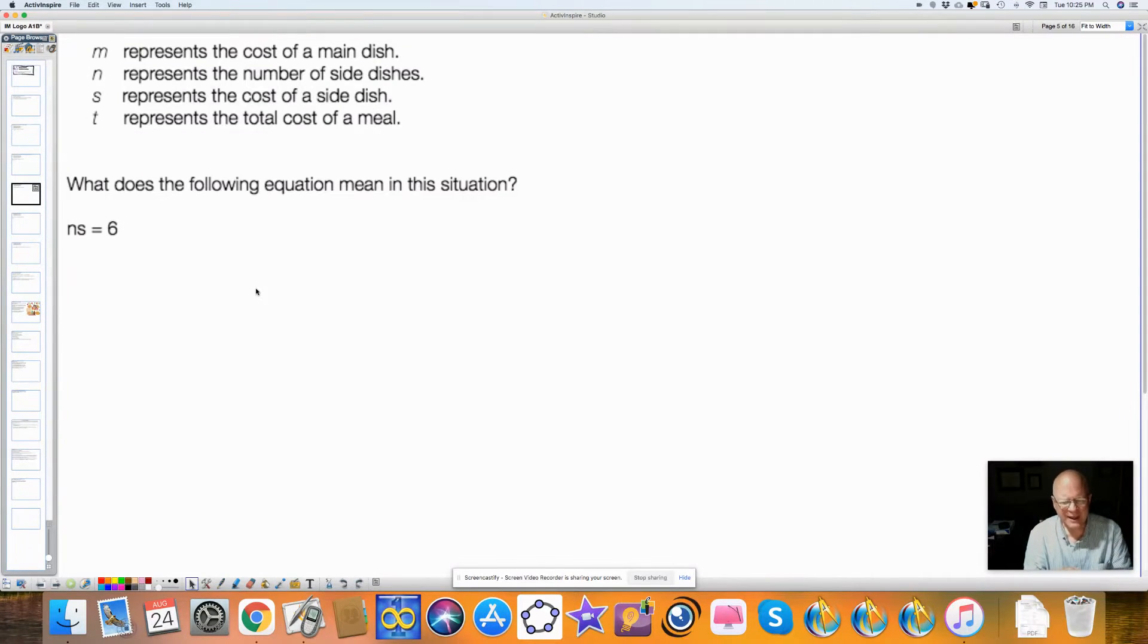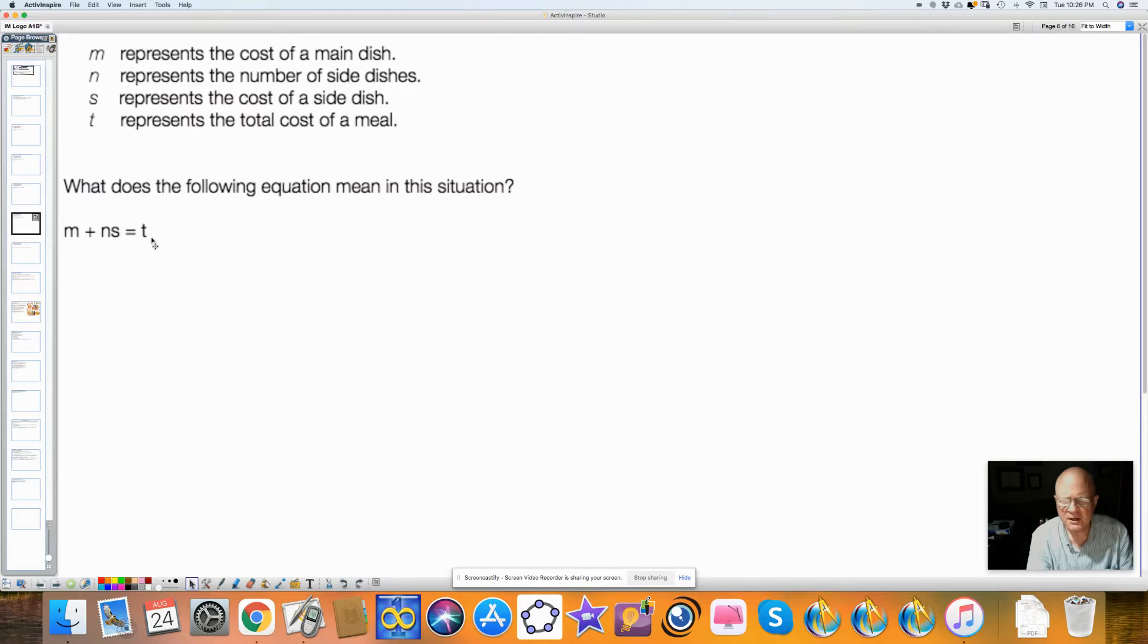Here we have N times S is equal to 6. Well, N is the number of side dishes, and S is the cost of a side dish. So if I have one side dish, it would cost so much. If I had a second side dish, it would cost so much. If I had a third side dish, it would cost so much. But altogether, all N of my side dishes would total $6. What does this mean in context? Well, the total cost of the meal is the cost of the main dish plus however many sides I have times the cost of each side dish. Does that make sense to you? Can you see how we're using these letters to come up with different values or expressions for real-world type of situations?